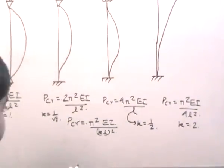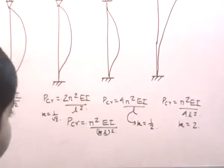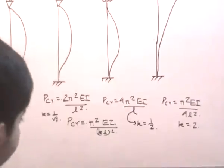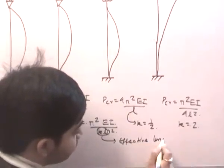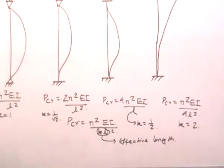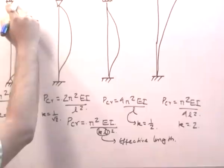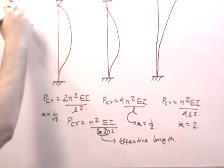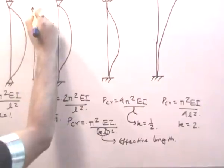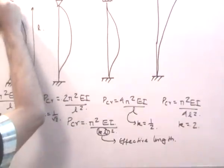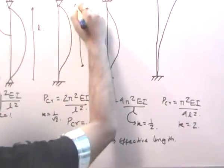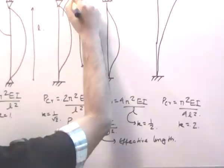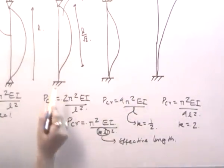KL is the effective length of the column. L is the actual length and K accounts for end fixity. The effective length is judged by the distance between the two inflection points. For hinge-hinge, length effective equals L. For fixed-hinge, length effective equals L/√2, which is the distance between the two inflection points of that deflected shape.